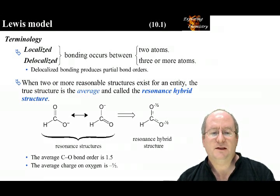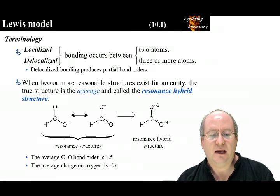I want to emphasize that the structures on the left do not exist. There is no rapid flipping back and forth. What exists is the structure on the right. And when we look at bonding from a quantum mechanical perspective, we will see that the structure on the right comes directly from a consideration of the available orbitals.